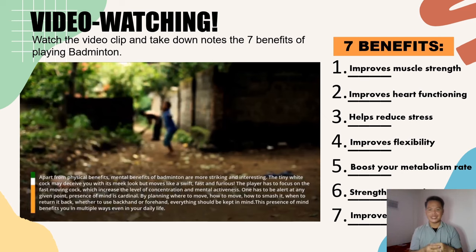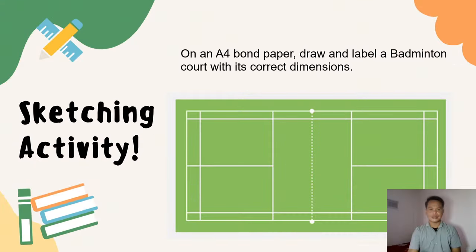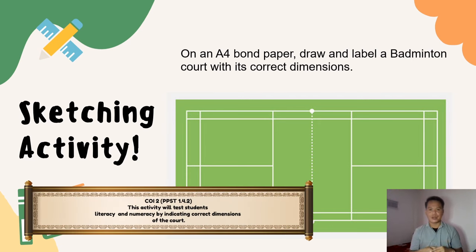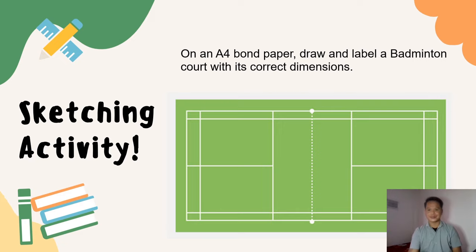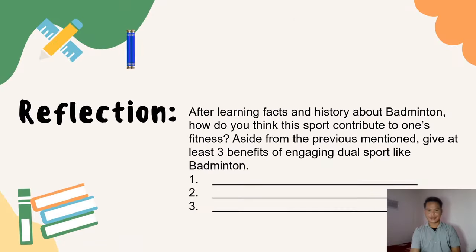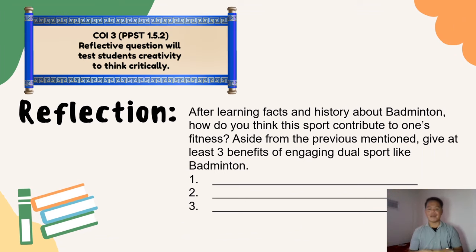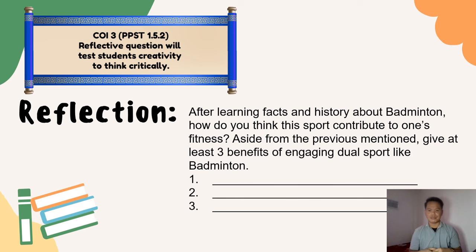Let's move further. This time, with a short bond paper or A4 paper, draw and label a badminton court with its correct dimensions. After learning the facts and history about badminton, how do you think this sport contributes to one's fitness? Give at least three benefits of engaging in dual sports like badminton.